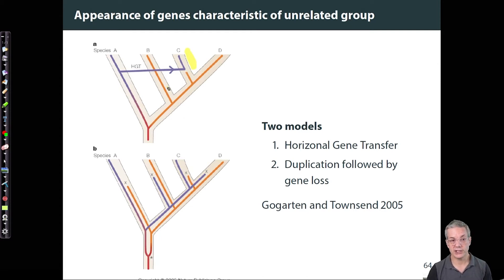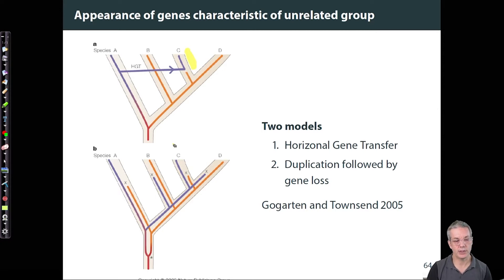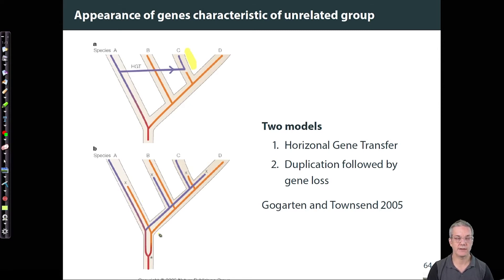But horizontal gene transfer is not the only mechanism by which such mistakes can be made. In the bottom figure, we show only vertical gene transfer. But actually, we're going to make the exact same mistakes.